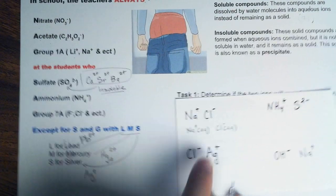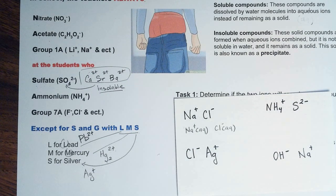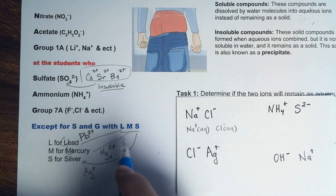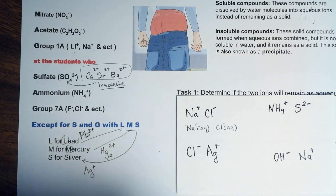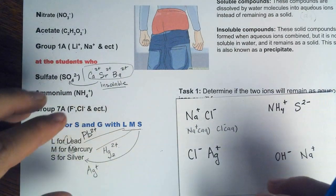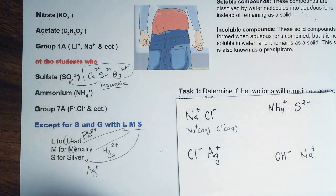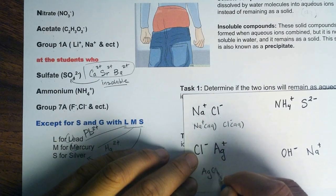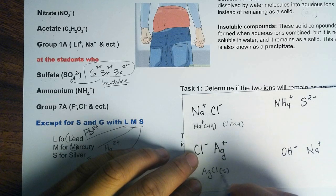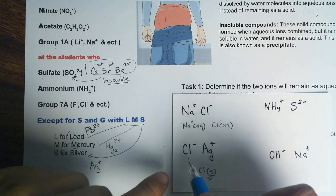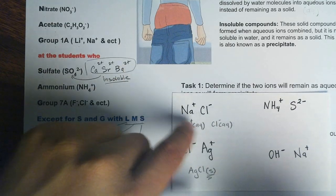Let's look at the next one. We have chloride and silver ions. Chloride comes from Group 7A, which is always soluble with the exception of LMS — lead, mercury, and silver. There's silver, so that means it will become insoluble. So when you mix a solution with chloride and silver ions, they will combine together to form a solid — AgCl — and they will form a precipitate as a solid, instead of remaining as aqueous ions.